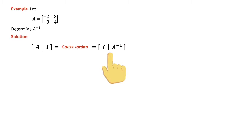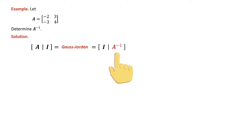What we get out of it: on the left side we get the identity matrix, and on the right-hand side we get the inverse. So doing Gauss-Jordan the way we learned it is just a special case of this. We'll have the identity matrix on the left and the inverse matrix on the right. That's the process.